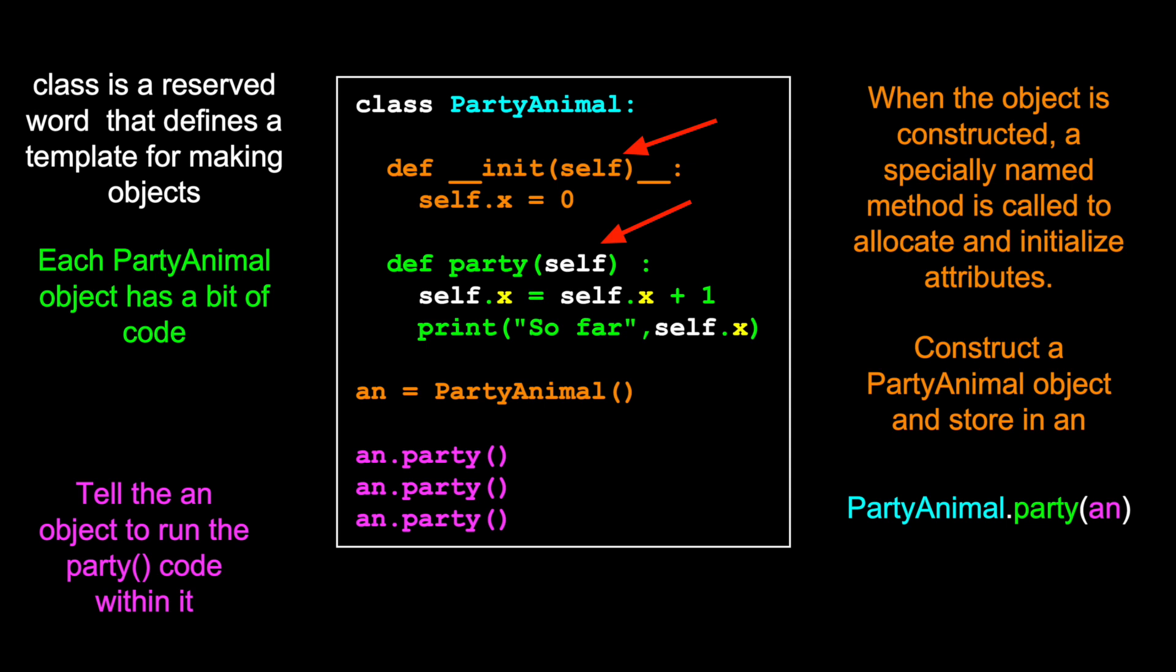Now this self thing, and we'll take a look at the self. The self ends up being an alias of an. And so you can look at this syntax. It's just kind of an equivalent of this syntax. It's calling the party method within the party animal class and passing the instance in as the first parameter. And so self ends up being an alias of an each time these are called. This syntax is a short version of that syntax.